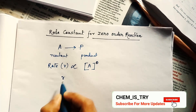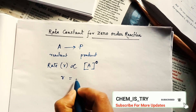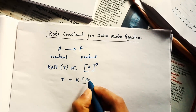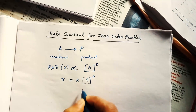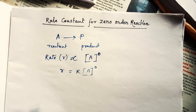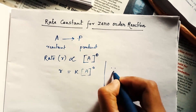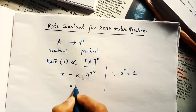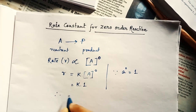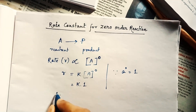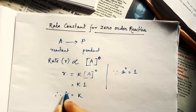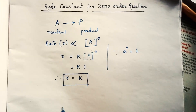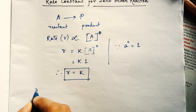To remove the proportional sign, we write r = k · [A]^0. Now, anything to the power zero equals one, so we can write r = k · 1, which gives us r = k. That is, the rate equals the rate constant.